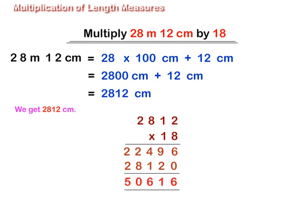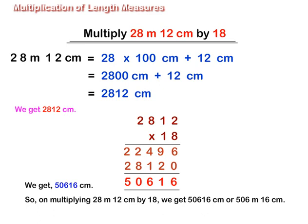Add both the products. We get 50,616 cm. So, on multiplying 28 m 12 cm by 18, we get 50,616 cm or 506 m 16 cm.